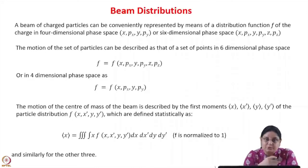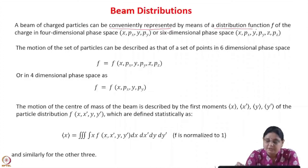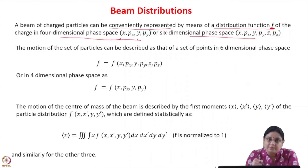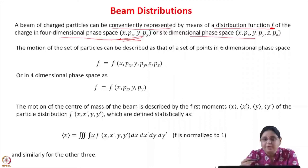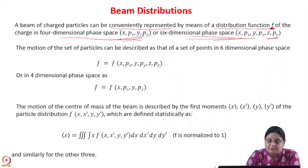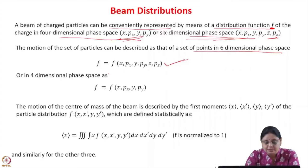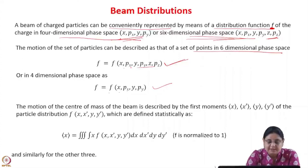A beam of charged particles can be conveniently represented by a distribution function f of the charge in 4-dimensional phase space (x, p_x, y, p_y) for DC beams, or 6-dimensional phase space (x, p_x, y, p_y, z, p_z) for bunched beams. Motion of the particles is described as a set of points in 6-dimensional phase space. The distribution function can be defined in either 4-dimensional or 6-dimensional phase space. The motion of the center of mass of the beam is described by first moments — the average of x, x', y, y' — defined statistically as the integral of x times the distribution function f integrated over dx, dx', dy, dy', where f is normalized to 1.